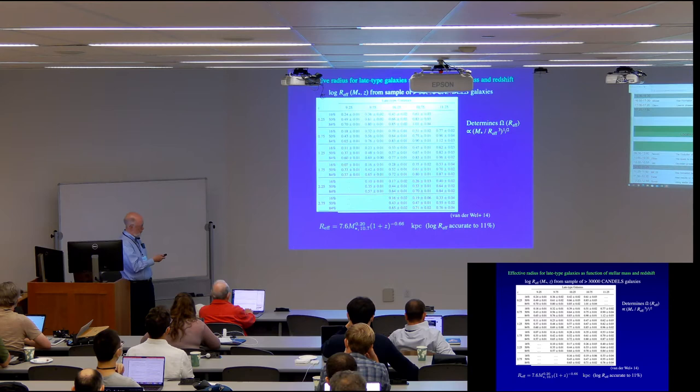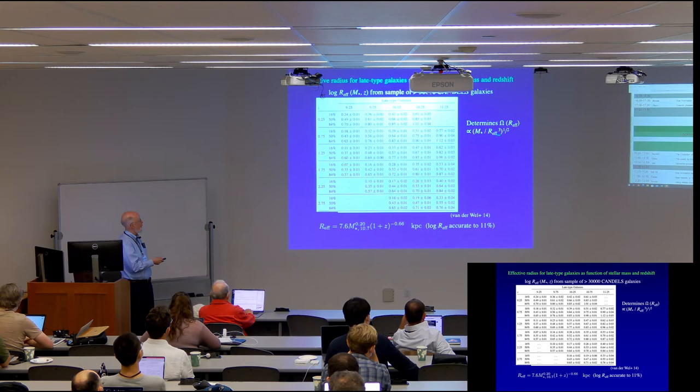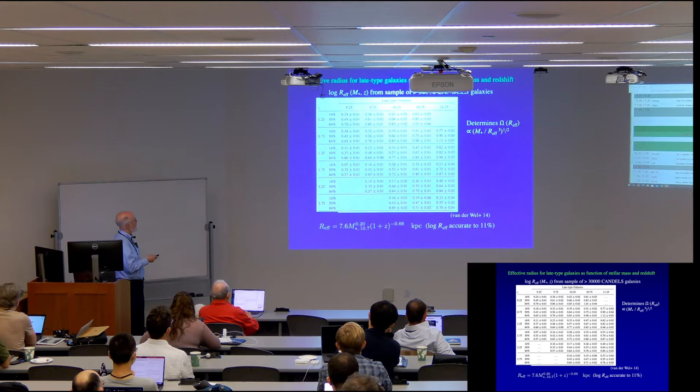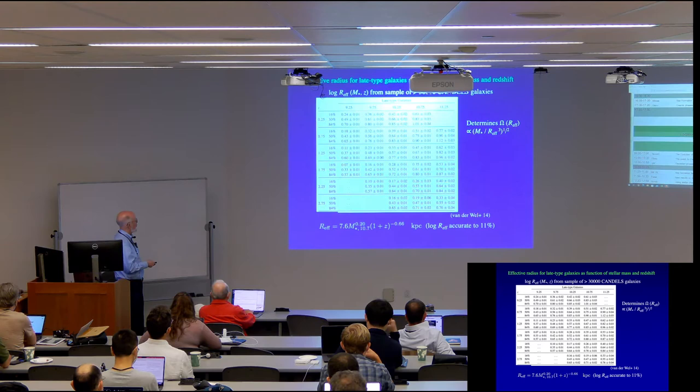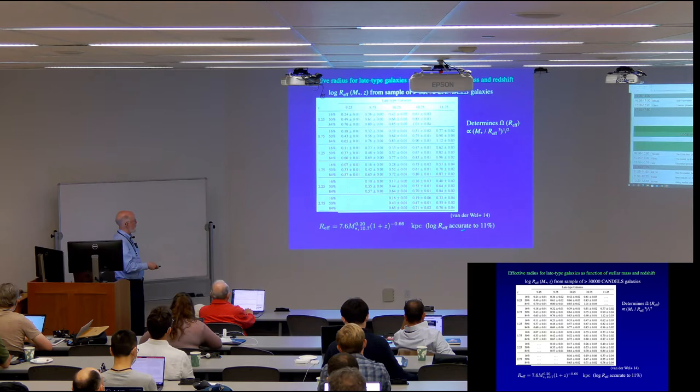Okay, now what we need to do is we need to determine what omega is, which depends on the radius as, you know, it varies as the square root of the mass in stars divided by this effective radius cubed. So I use the data that Arjun referred to in his talk. And I just focus here on the late-type galaxies. And here he has it as a function of redshift going from a quarter to almost three. And then four different massive galaxies from 10 to the 9.25 to 10 to 11.25. So that's two decades. And what I did was I just did a simple fit for the median values. And you can show that this gives you a result where the log is accurate to 11%. So that's what we will use.